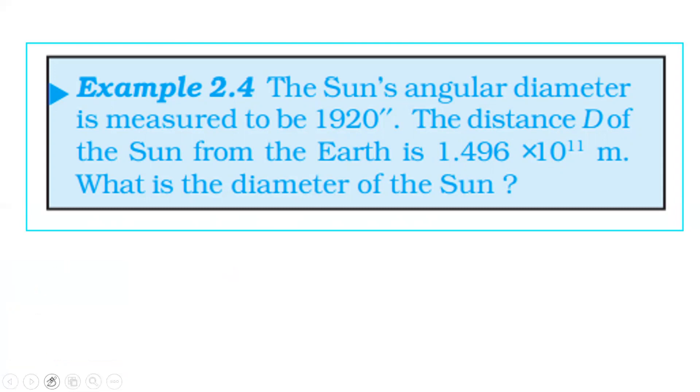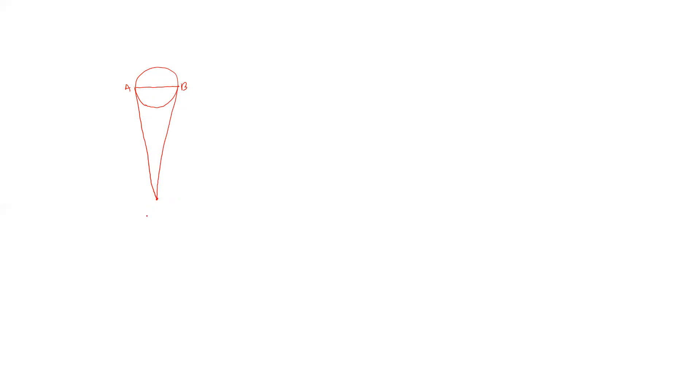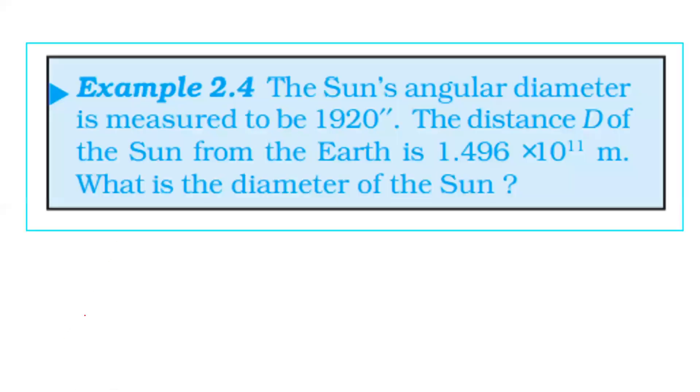The diameter of the sun subtends an angle at the Earth. This is the Sun and the Earth. The angle subtended by the diameter of the Sun at the Earth is the angular diameter, and the angular diameter is 1920 seconds.